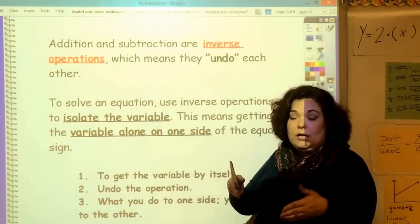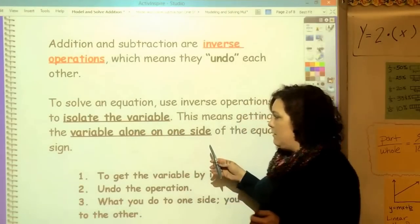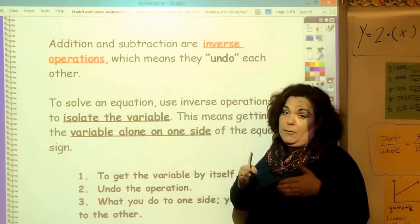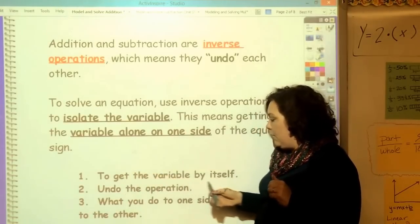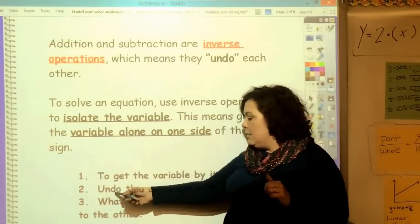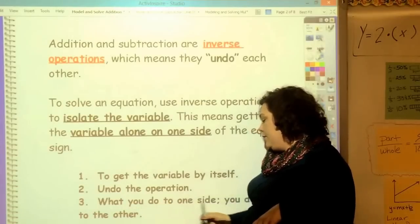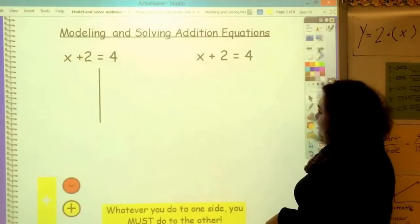If you have addition, to undo it, you're going to subtract. The whole goal of solving an equation is to isolate the variable. That means getting the variable by itself by undoing the operation. And you're going to hear me say over and over again, what you do to one side, you do to the other.